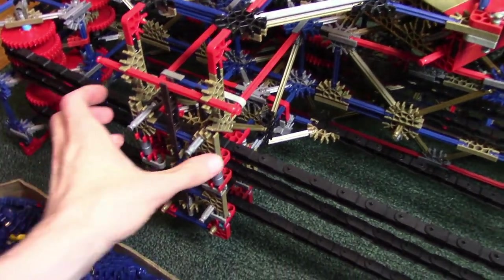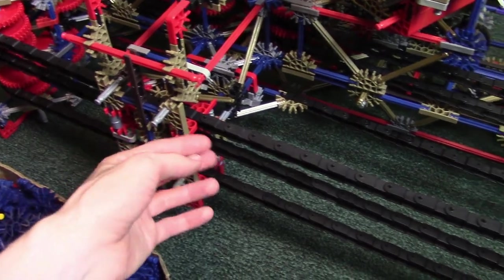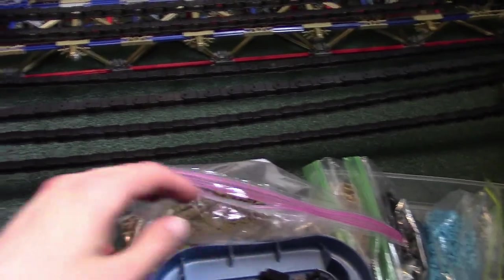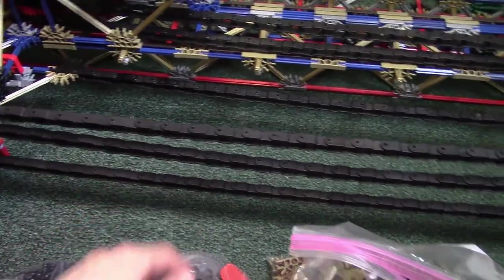I forgot to mention this portion in the back which keeps the chain aligned and keeps it from sagging too much. This span right here is so long that without this it would bend down a lot and that would mess it up at the gears.